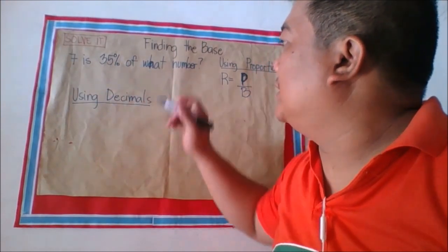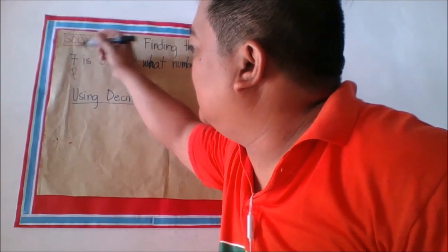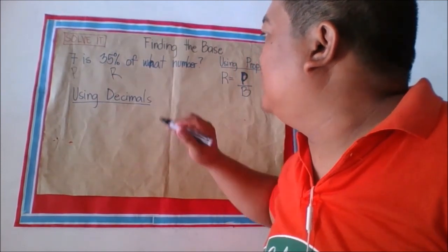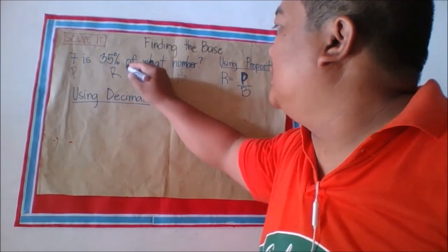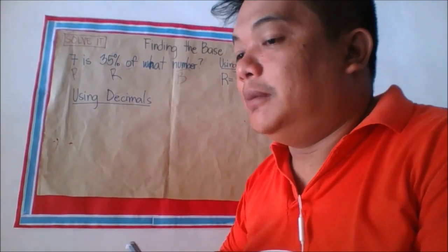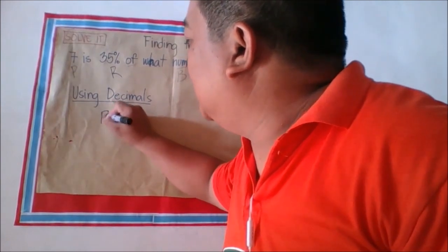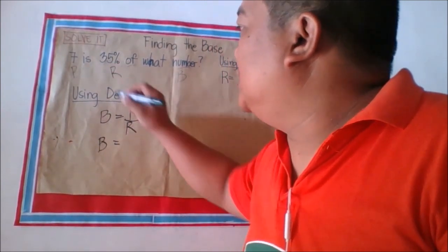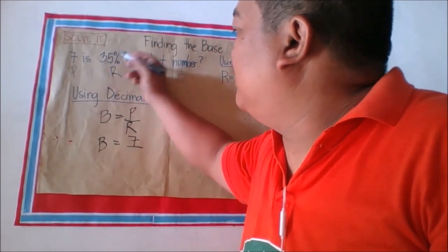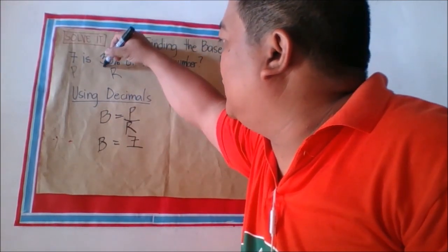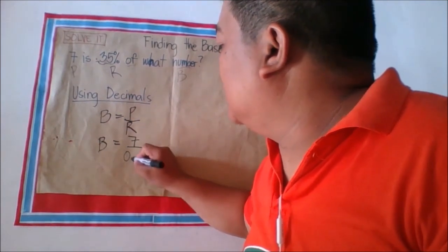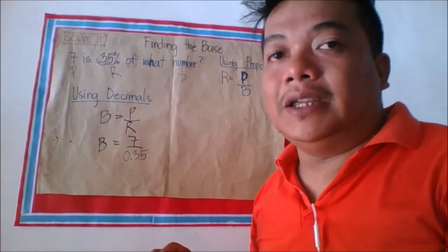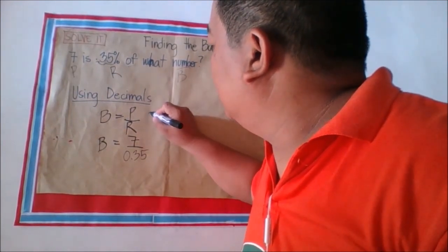Finding the base. Example: 7 is 35% of what number? Here, 7 is the percentage because of the word 'is,' and 35% is the rate because it is accompanied with the percent symbol. 'What number' is the base because of the word 'of.' Using decimals, we use the formula: base equals percentage divided by rate. So base equals 7 divided by 35%, which as a decimal is 0.35.